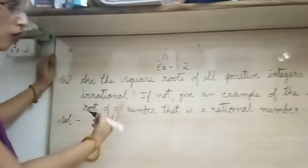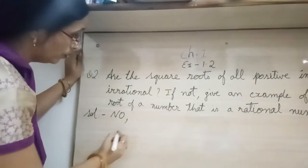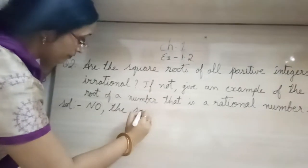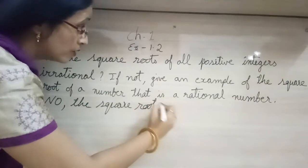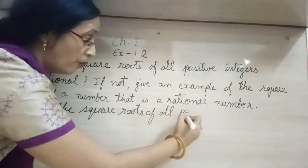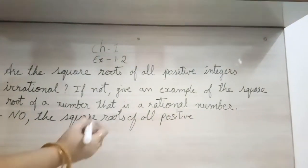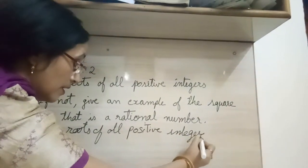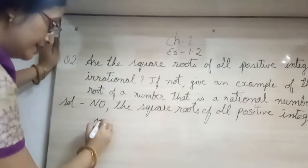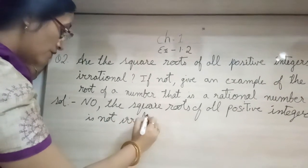So are the square roots of all positive integers irrational? The answer will be no, the square roots of all positive integers is not irrational.